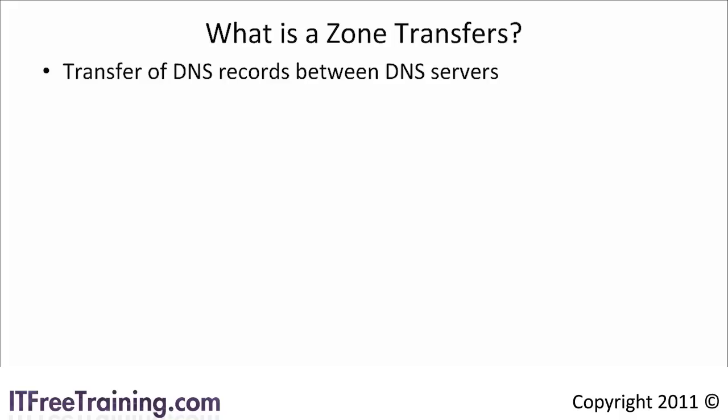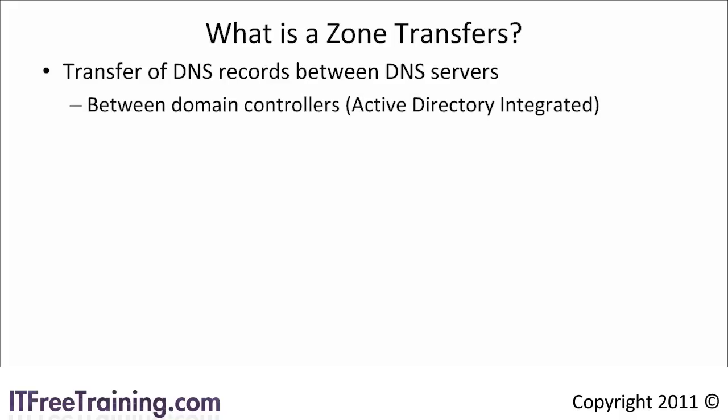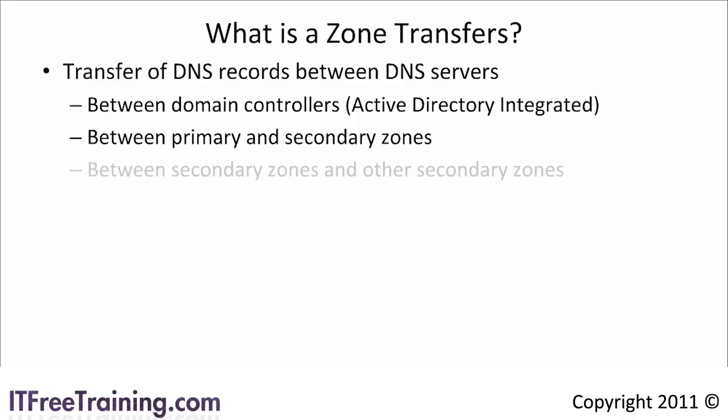If you are using Active Directory integrated zones, this process happens between domain controllers with the rest of the Active Directory database. If you are using primary zones, this happens between the primary zone and the secondary zone or zones. There can only ever be one primary zone; however, you can have as many secondary zones as you wish. You can also have zone transfers between secondary zones and other secondary zones.